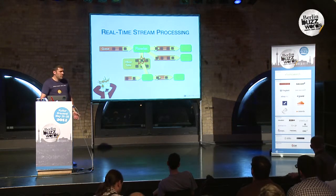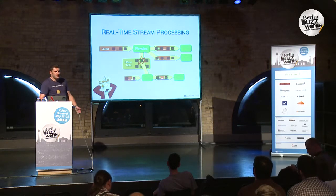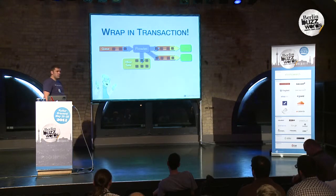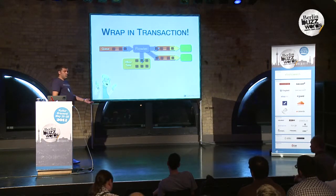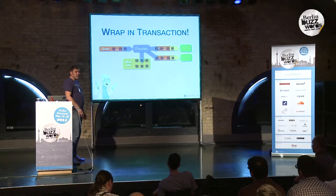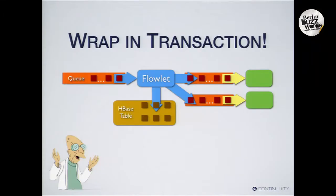What's the solution? Many years ago, decades ago, that's what transactions were invented for in relational databases. Transactions protect us from that. If we think about what a flowlet does, it's fairly simple: read an input event, do some processing, store some data, emit some output event. And so we implemented a way of doing transactions that encapsulates all of that in a transaction, implemented over HBase.